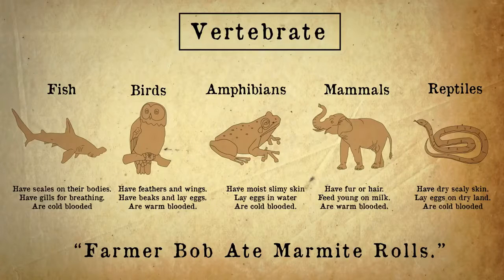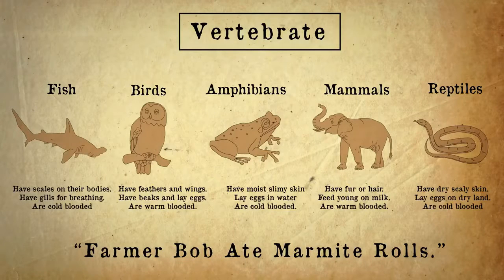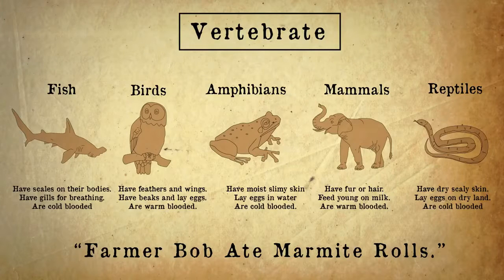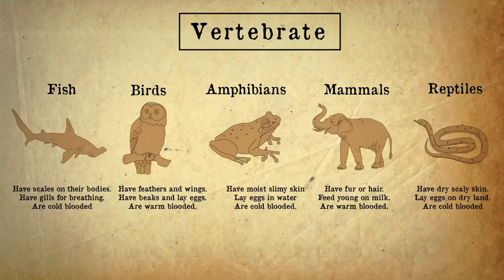Sometimes people aren't too sure whether something is a reptile or an amphibian. Reptiles have scaly skin, breathe air, and usually live on land, except for turtles. Amphibians live double lives — they start in the water and breathe through gills, and as they grow older they develop lungs.